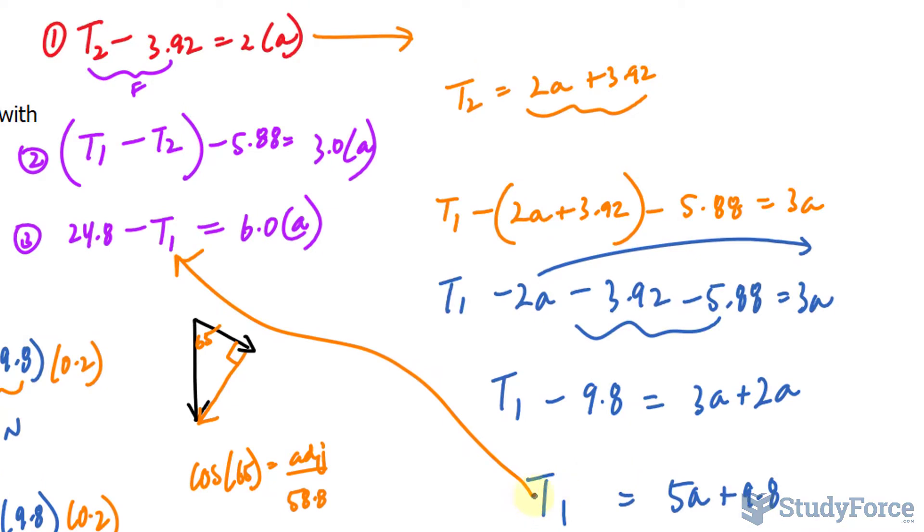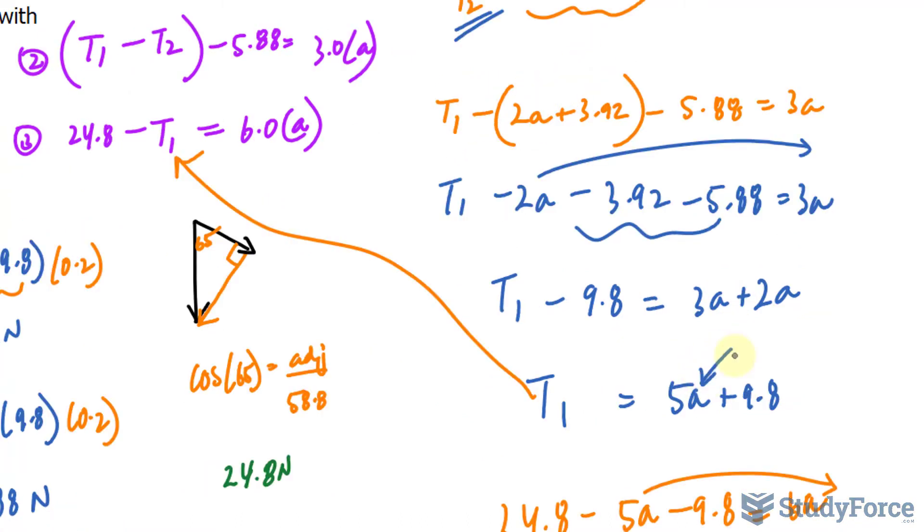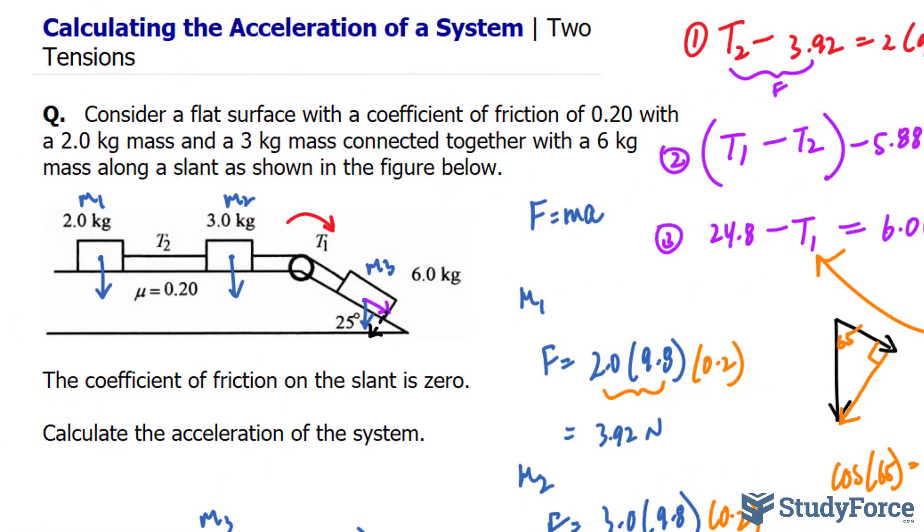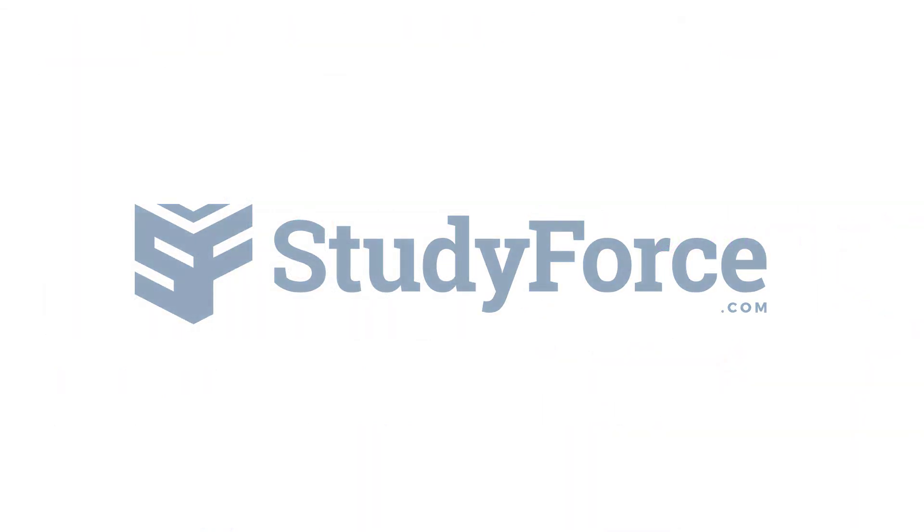Now, if you'd like to find the tension, the tension for T sub 1 and T sub 2, you would substitute that value for A into there. That will give you T sub 2. And to get T sub 1, you substitute it into there. And so there you have it. Now you know how to calculate the acceleration of a system for three masses that are connected by two separate cords.